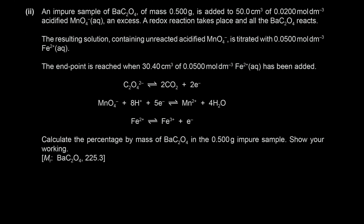An impure sample of barium ethanedioate (0.5 g) is added to 50 cm³ of 0.02 mol dm⁻³ acidified MnO4⁻ (excess). The excess MnO4⁻ oxidizes the ethanedioate to CO2. The remaining MnO4⁻ is titrated with 0.05 mol dm⁻³ Fe2+(aq), requiring 30.4 cm³. Calculate the percentage by mass of barium ethanedioate (Mr = 225.3).